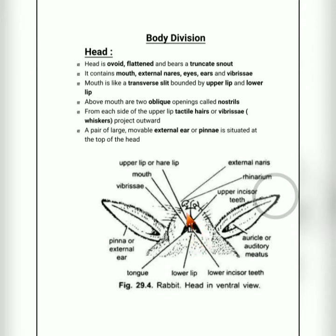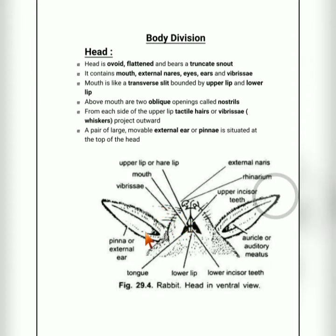Above the mouth, two openings are present — these are called nostrils. On each side of the upper lip, tactile hairs or vibrissae are present — these are the whiskers. These are connected to the sense of touch and also act as sense organs.